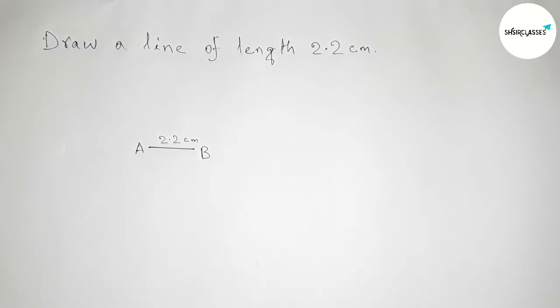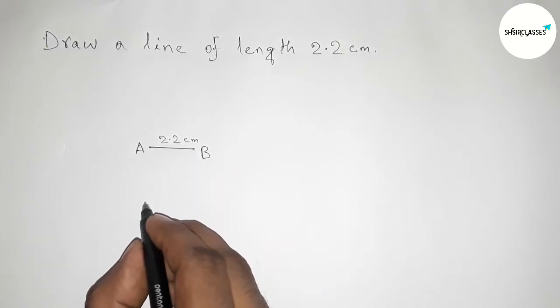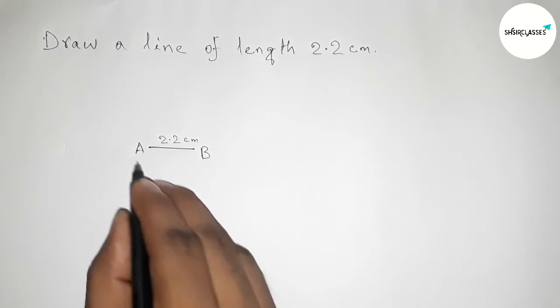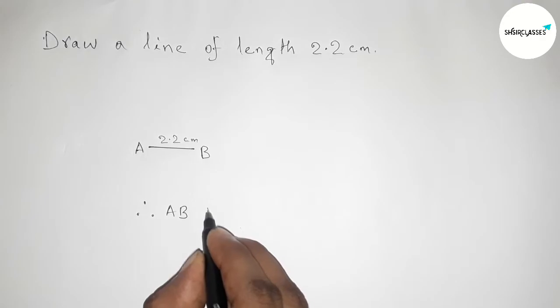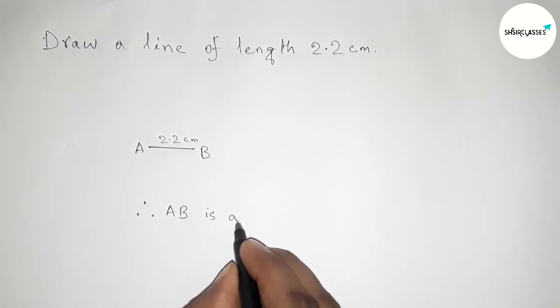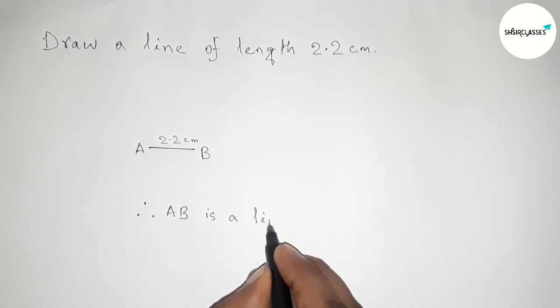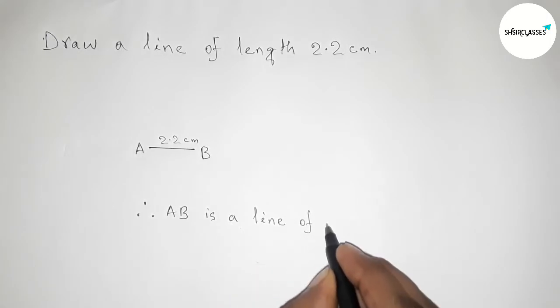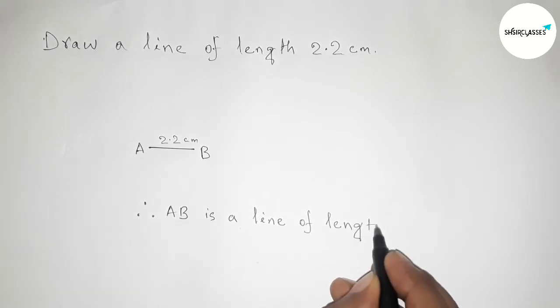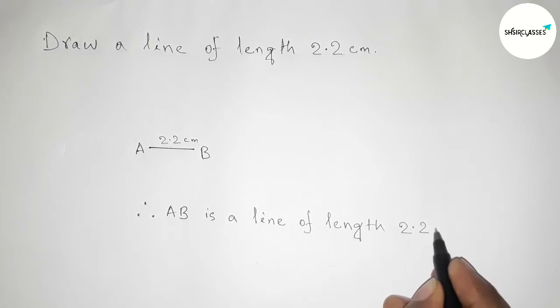Okay, so therefore AB is a line of length 2.2 centimeters. And by this way you can draw a line of length 2.2 centimeters by using a scale.